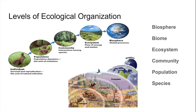There are many different levels at which we can organize life. At the lowest level, we have the individual — members of a species, which is all of the closely related organisms that can potentially interbreed. Multiple individuals of the same species characterize a population, which is all members of a single species in a given area.